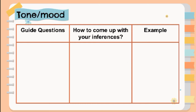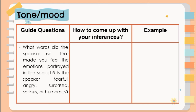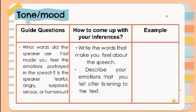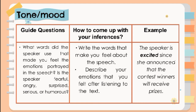Next is the Tone or Mood. Guide questions: What words did the speaker use that made you feel the emotion portrayed in the speech? Is the speaker fearful, angry, surprised, serious, or humorous? Steps: Write the words that you may feel about the speech and describe your emotions after listening to the text. Example: The speaker is excited since she announced that the contest's winners will receive prizes.